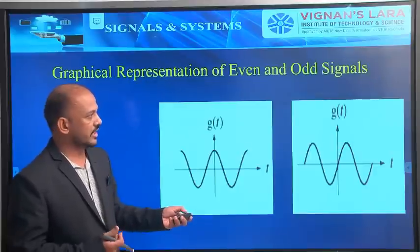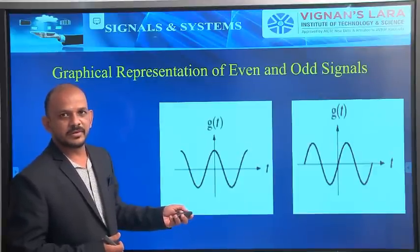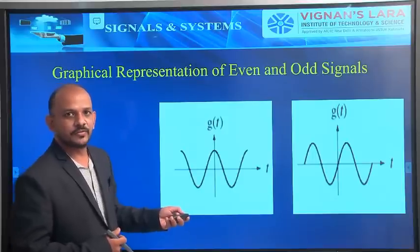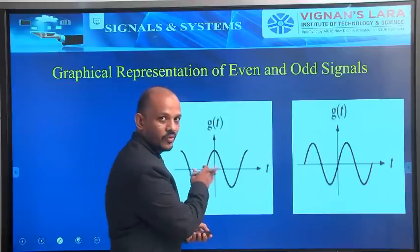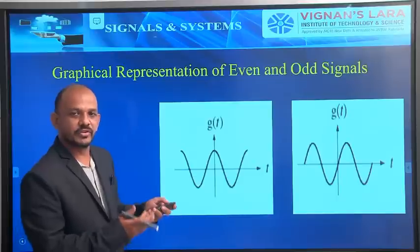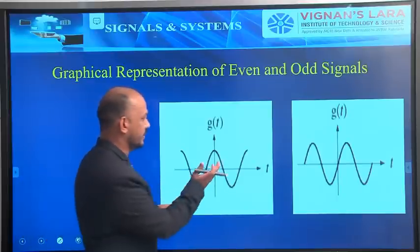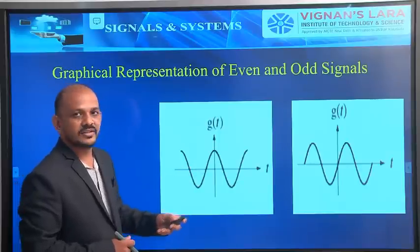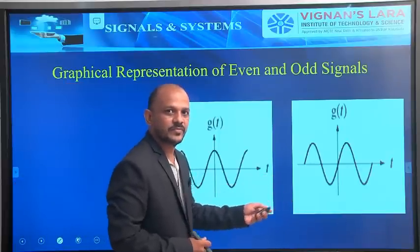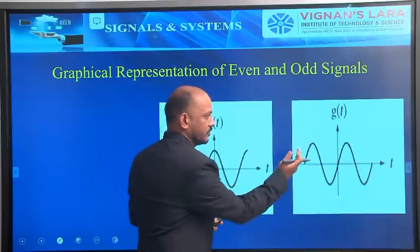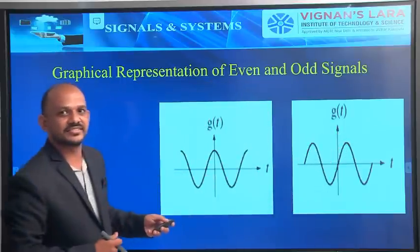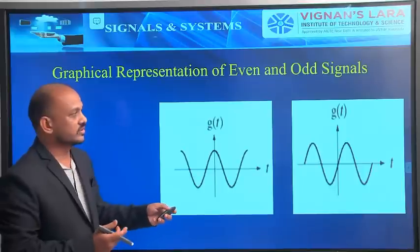We already saw the examples — symmetric even signals, anti-symmetric odd signals. Even signals are folded with respect to the y-axis; if we fold with respect to the y-axis, the image will coincide. For odd signals, we first fold with respect to the y-axis and then with respect to the x-axis — that is anti-symmetrical, odd signals.